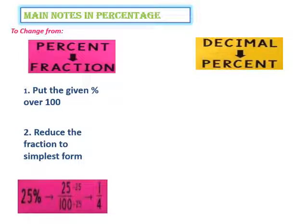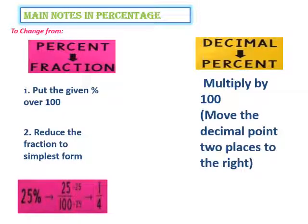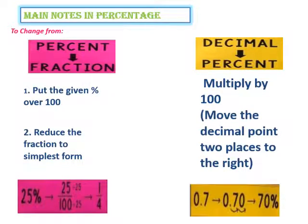And, to change it from decimal to percent, we multiply by 100 by moving the decimal point two places to the right. For example, we have 0.7. We move the decimal point two places to the right. Then, the answer will be equal to 70%.